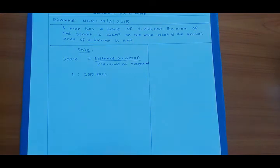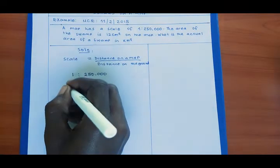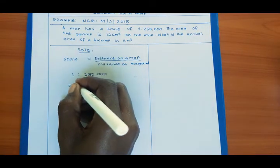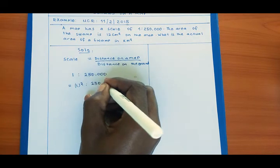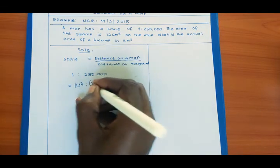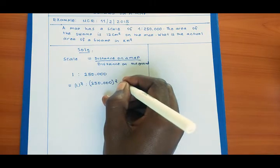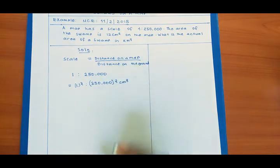The area of the swamp is given in square centimeters. Then that means we shall also square our scale. So it will give us 1 squared to 250,000 squared. This one will now give us in centimeters squared.